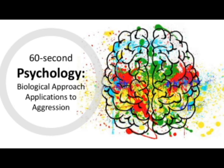Our genes, and therefore our characteristics and behaviours, are outdated. Neuroanatomy can also be used to account for aggression through the concept of localisation of brain function. This is the idea that different parts of the brain control different functions, so certain parts of the brain have been linked to aggressive behaviour. For example, the amygdala plays an important role in assessing and responding to threats. Therefore, imbalance or overactivity in this area may increase risk perception.